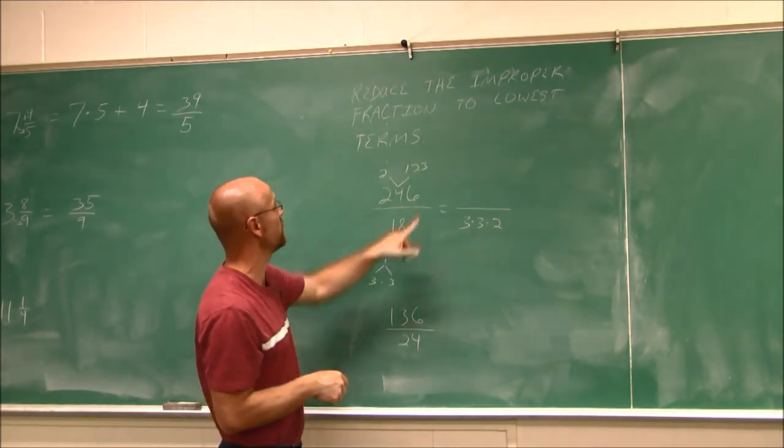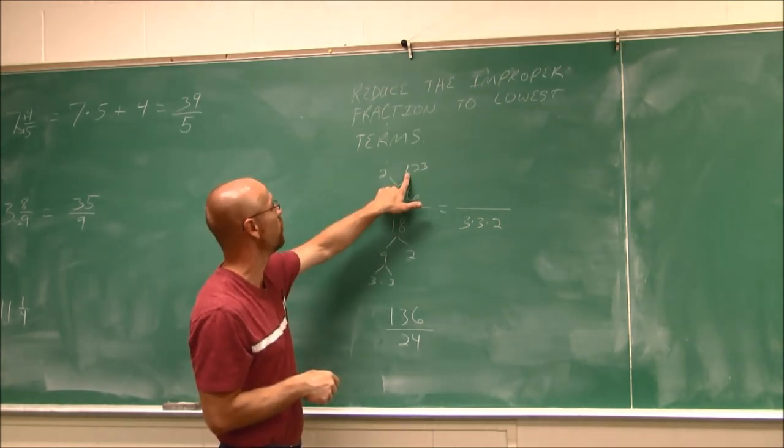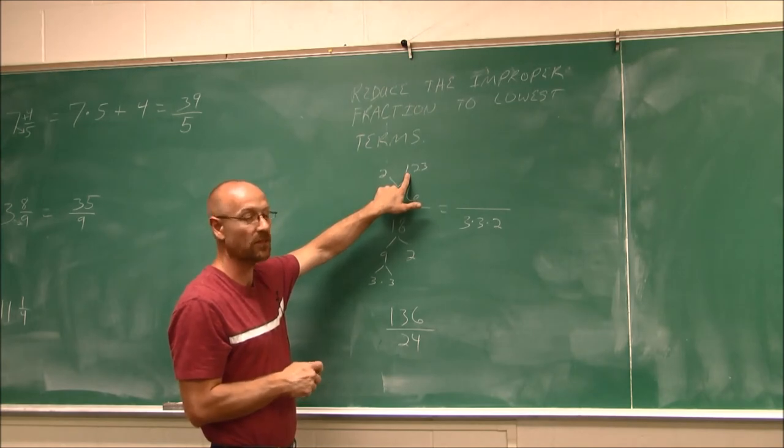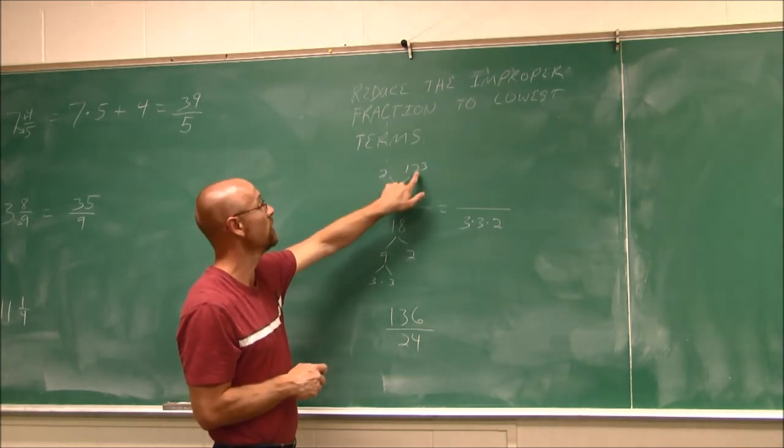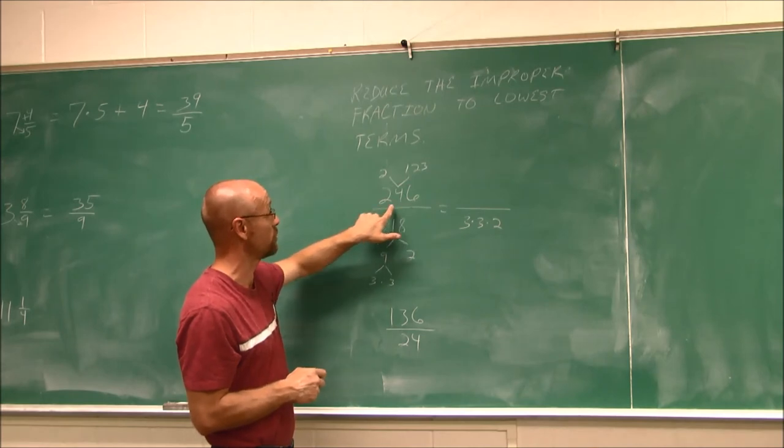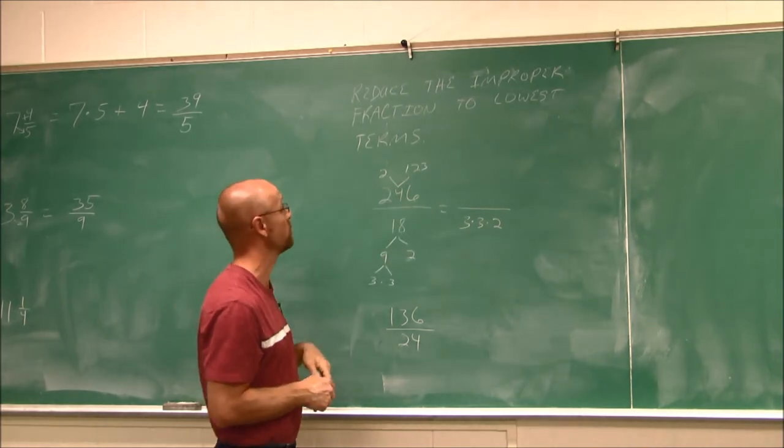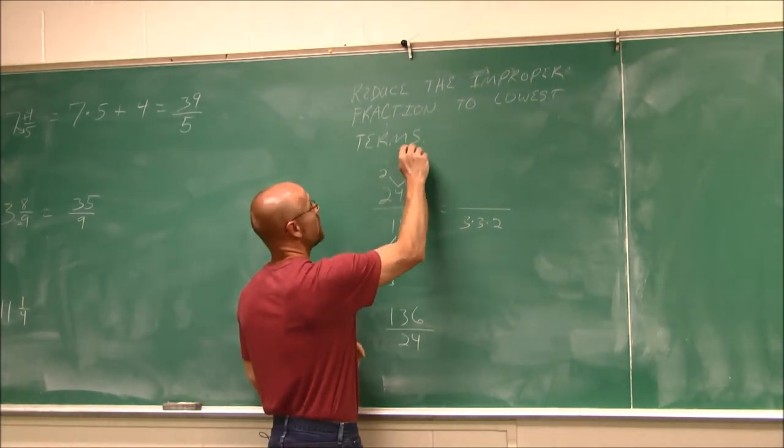This number here, maybe I test for divisibility. And I say 3 and 2 and 1 is a total of 6. 6 is divisible by 3. So this number is divisible by 3. And we can see that would hold true here. This would be 12. 12 is divisible by 3. So let's divide this by 3.